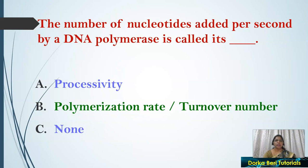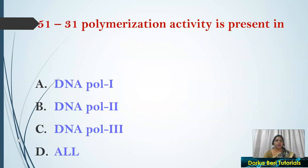Next question: 5' to 3' polymerization activity is present in — options: DNA Pol 1, DNA Pol 2, DNA Pol 3, or all. The answer is all. All DNA polymerases by default contain 5' to 3' polymerization activity.